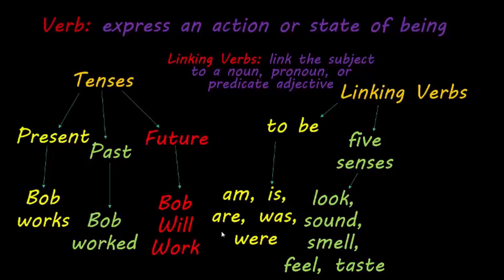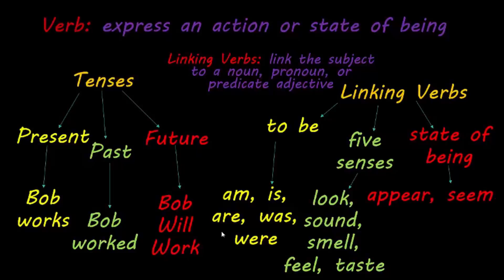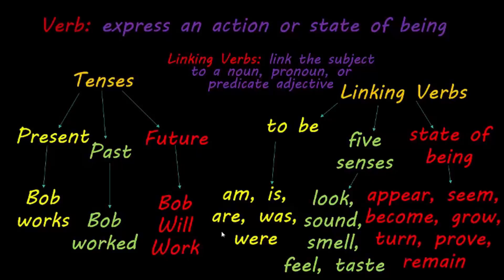Next, we're going to discuss the state of being as a form of linking verb. Some state-of-being verbs include appear, seem, become, grow, turn, prove, and remain. For example, 'He became angry when he lost his keys' — became is your state of being and the linking verb, connecting the subject he to the adjective angry.